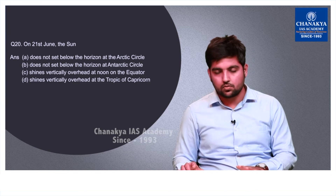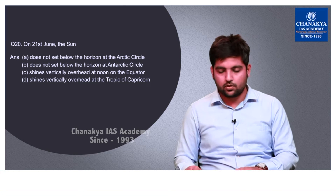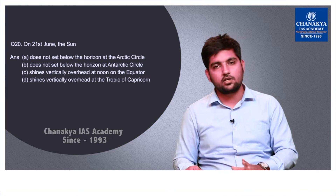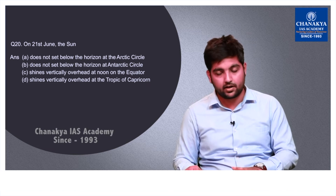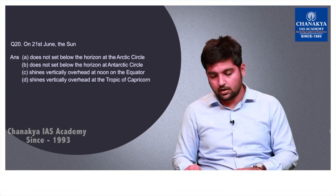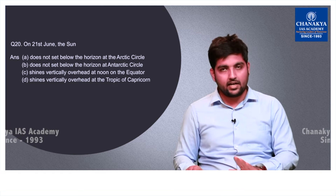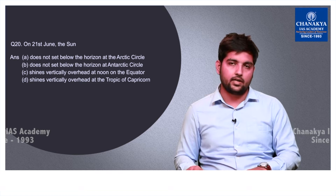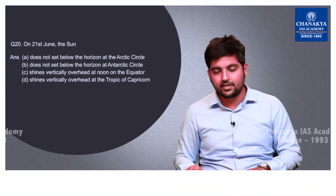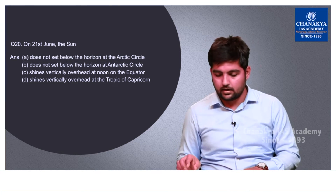Question number 20 is about the sun on 21st June, which is the longest day of the year and also International Yoga Day. The correct option is A — the sun does not set below the horizon at the Arctic Circle on 21st June every year — because at that time the sun is vertically overhead above the Tropic of Cancer and hence does not go below the horizon at the Arctic Circle. This is a very fundamental geography question and the correct option is A.